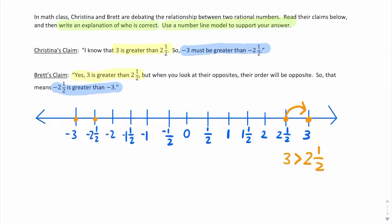Now, if I want to know which one is greater, I'm looking at the one that is farther to the right. So it looks like, if I want to know which one is greater, negative 2 and 1 half is actually farther to the right. Therefore, it is greater than negative 3. Negative 2 and 1 half is, in fact, greater than negative 3.